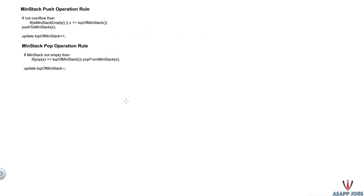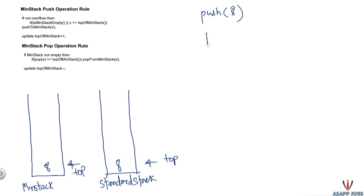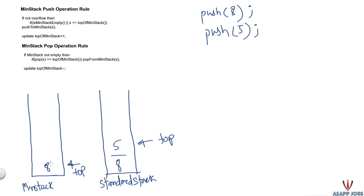Let's trace through the same example with two stacks: standard stack and min stack. We push eight — it goes into standard stack, and also into min stack since min stack is empty. Then we push five into standard stack, and since five is less than the top of min stack (eight), we push five into min stack too. If we call getMin now, it returns the top of min stack, which is five — correct.